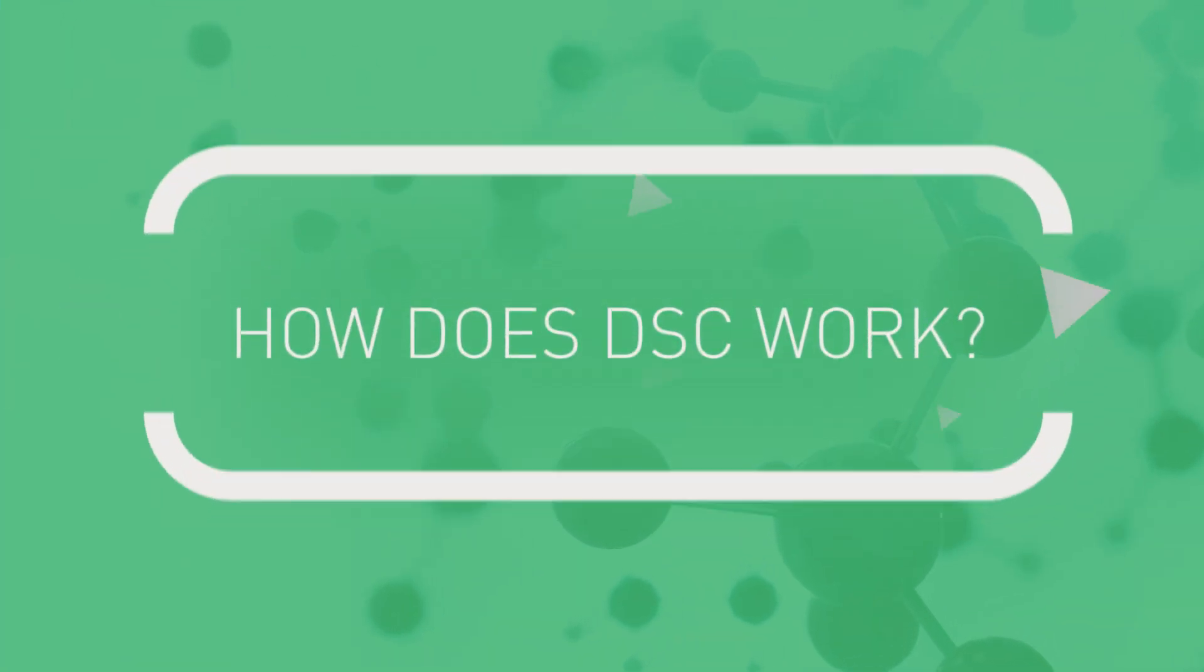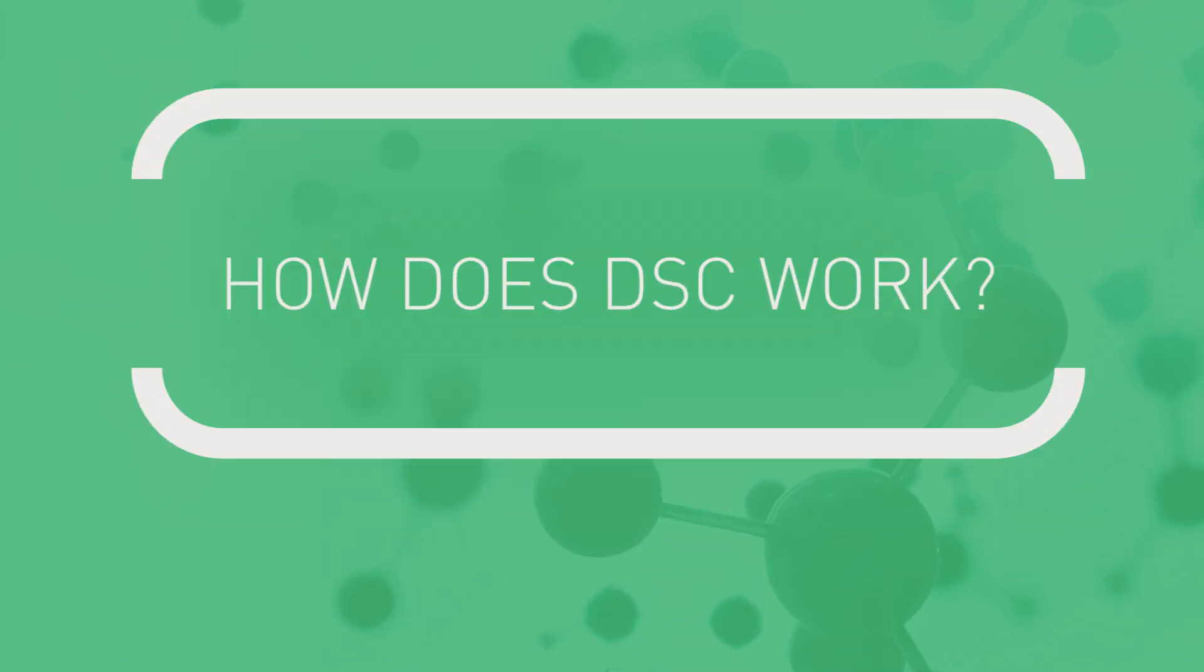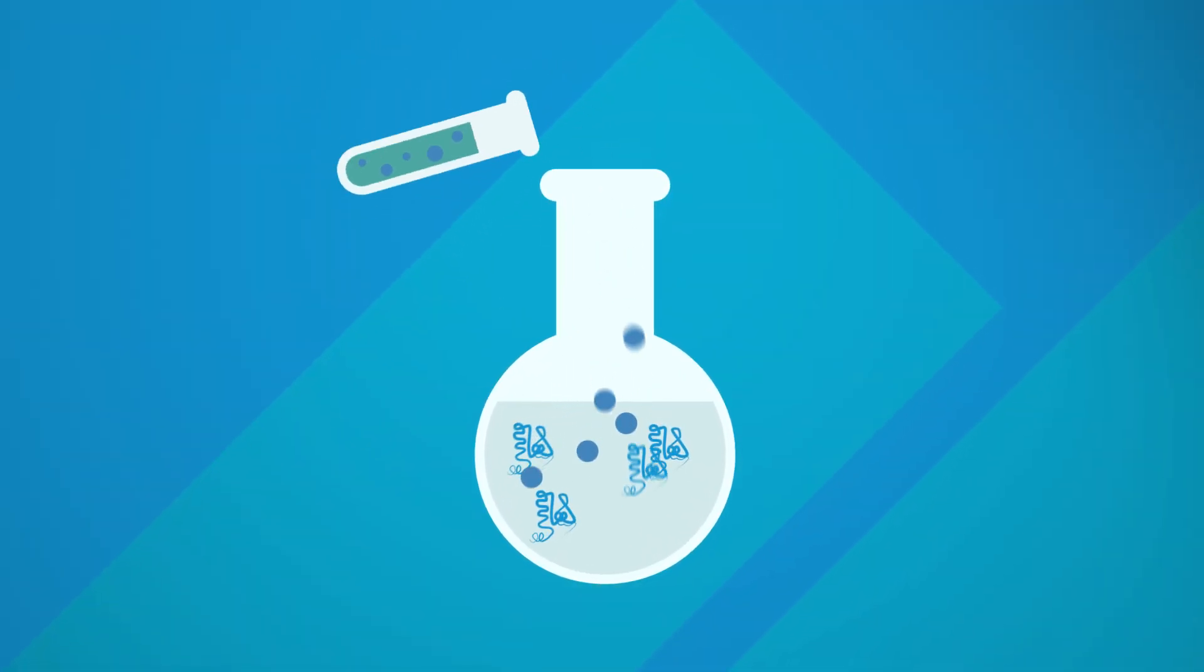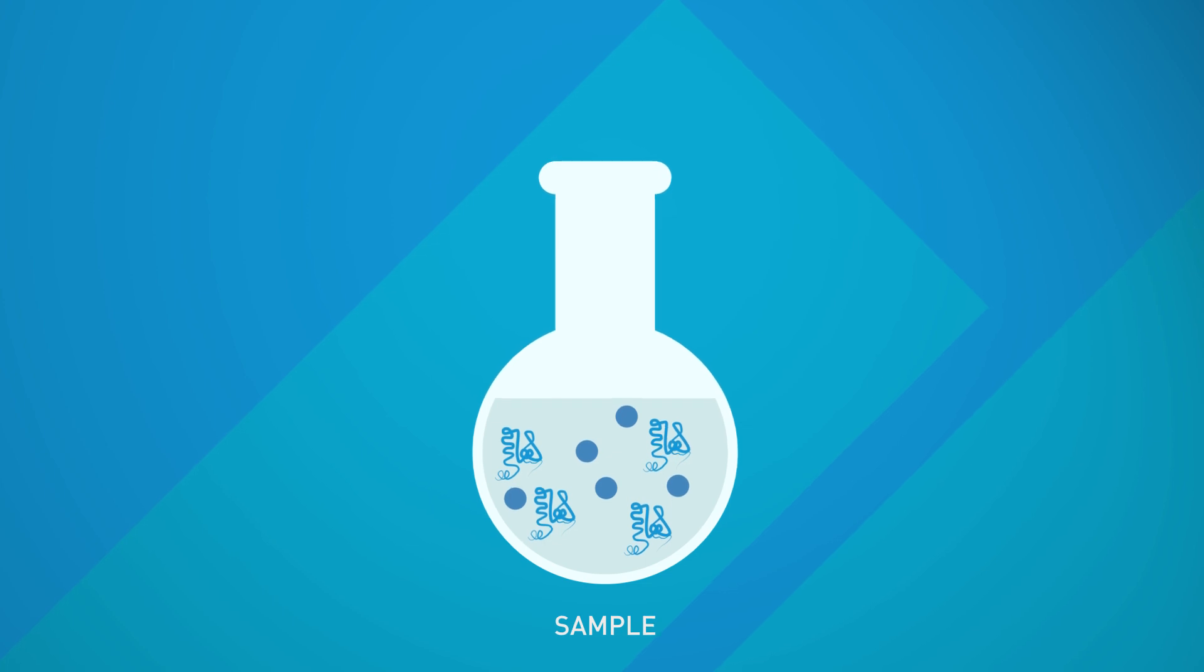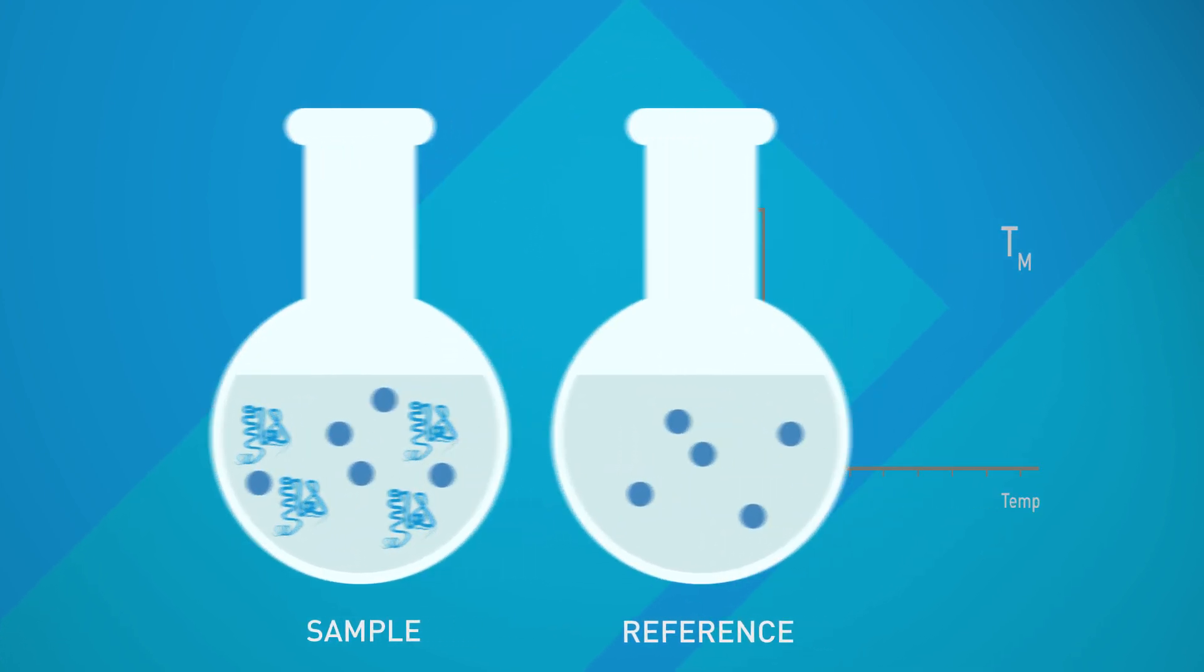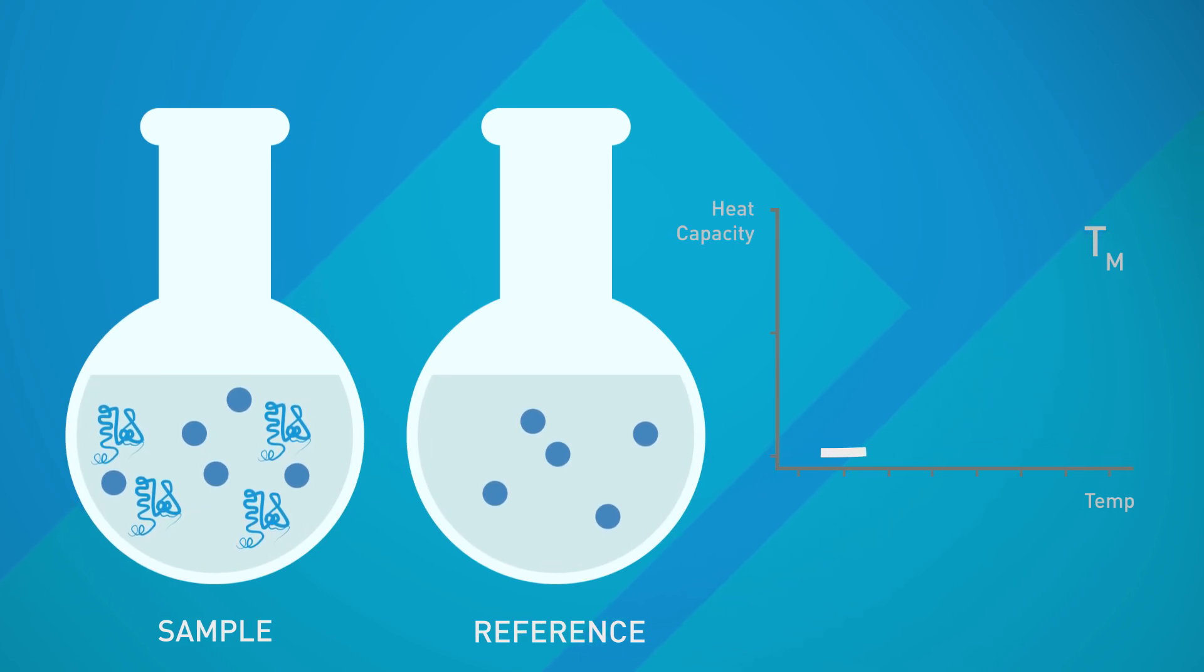How does DSC work? During a DSC experiment, the protein in the desired buffer is placed in the sample cell. A matched buffer is placed in the reference cell. At the starting temperature, the protein still retains its native shape and structure. As the sample and reference cells heat up, the protein begins to thermally denature. The protein's heat capacity CP increases.